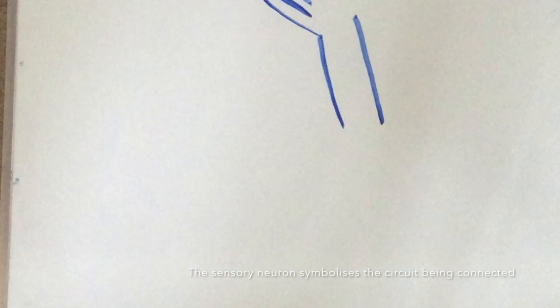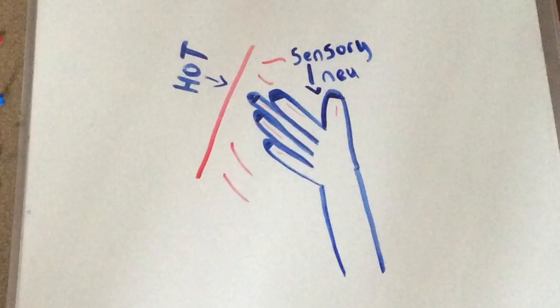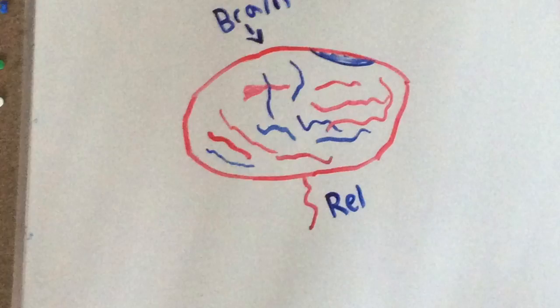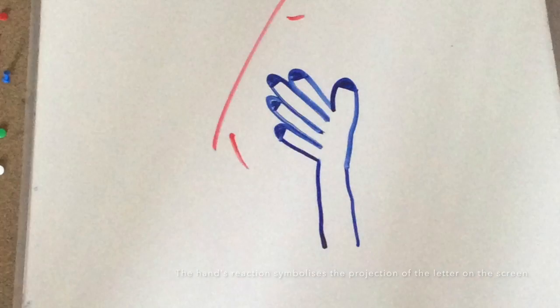When a human hand encounters an uncomfortable environment, a sensory neuron is activated. This sends a signal via a relay neuron to the brain to process it. The neuron is then sent back to the human hand, causing the hand to move away.